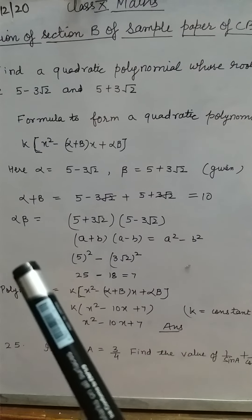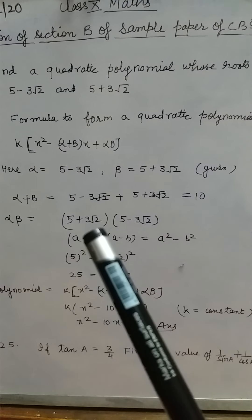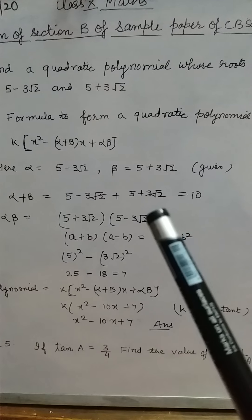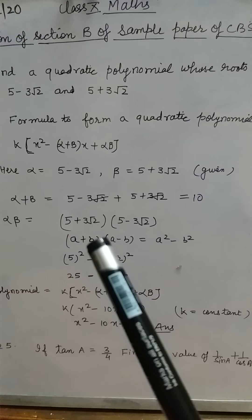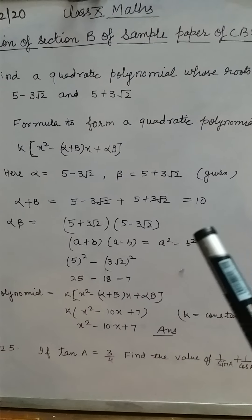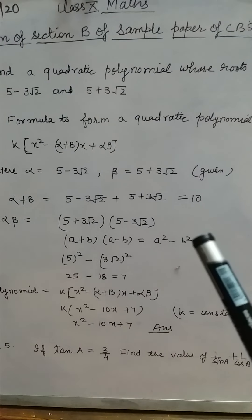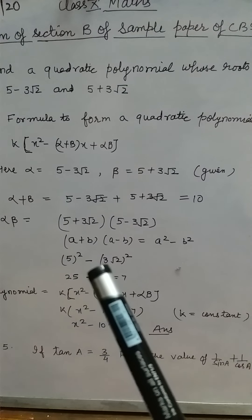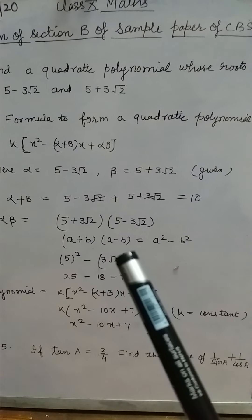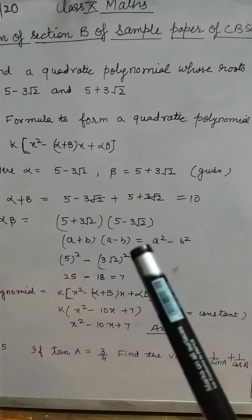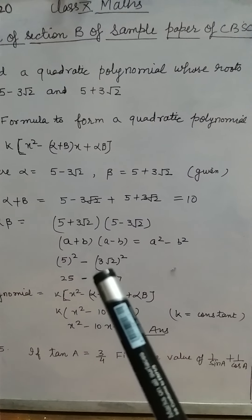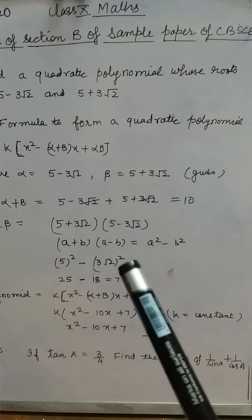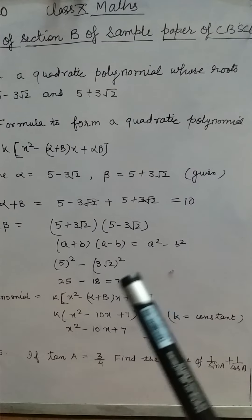Now we will find the product of the roots: (5 plus 3 root 2) into (5 minus 3 root 2). This is of the form (a plus b)(a minus b), which equals a squared minus b squared. So this becomes 5 squared minus (3 root 2) squared, which is 25 minus 18, equal to 7.